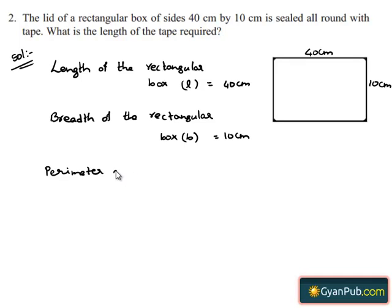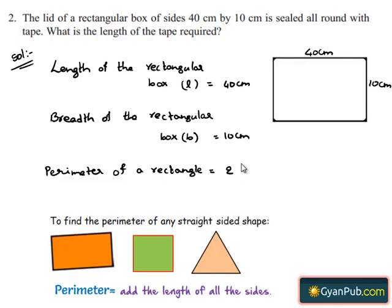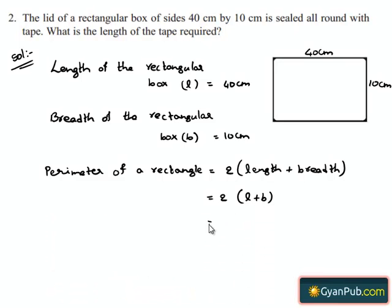We know that perimeter of the rectangle is equal to 2 times the length plus breadth, which is equal to 2 times L plus B. We have L as 40 cm plus B as 10 cm. This is equal to 2 times 40 plus 10 cm, which is equal to 2 times 50 cm. This is equal to 100 cm.